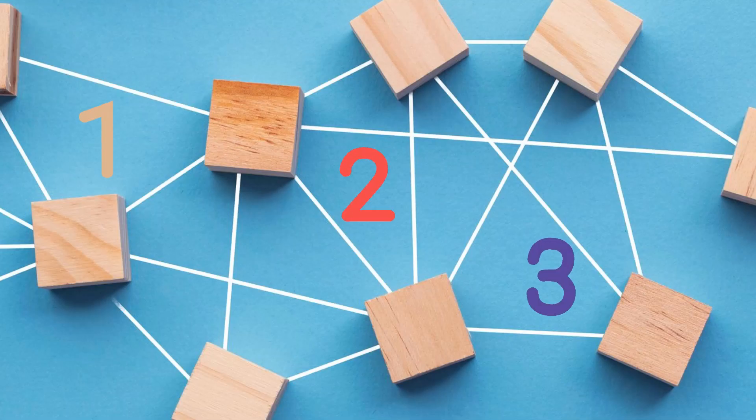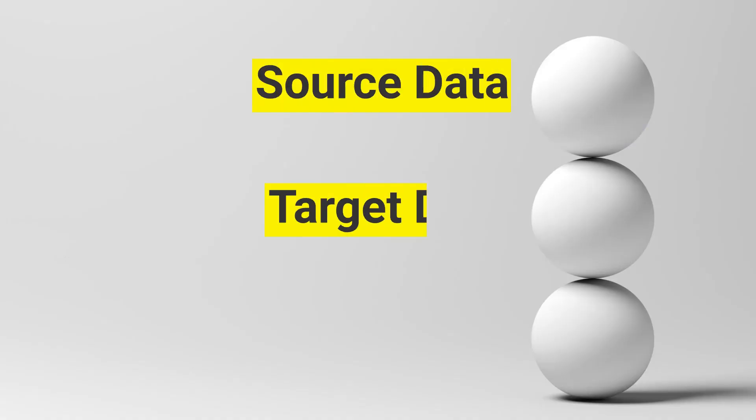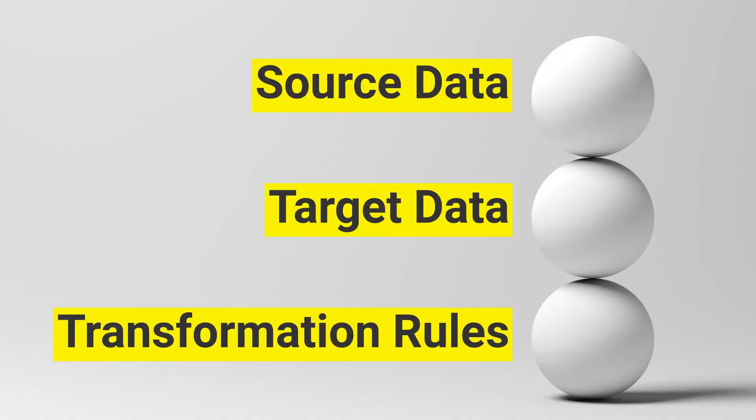There are three key components to data mapping: source data, target data, and transformation rules.